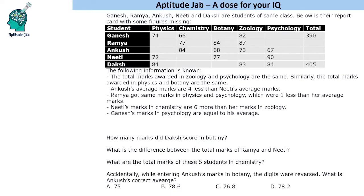Hello everyone, welcome to Aptitude Jab. This set says that there are five students and they got marks in five different subjects. Some values are missing in the data table — some totals are given, marks of some students and some subjects are given. We need to fill this table.